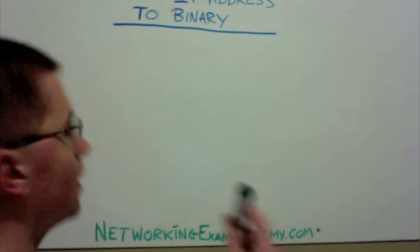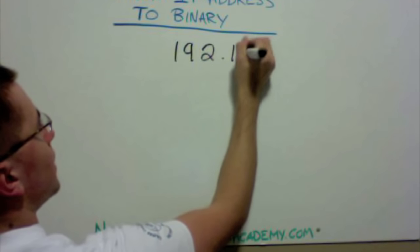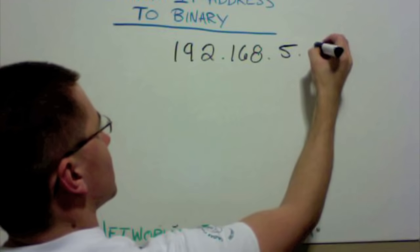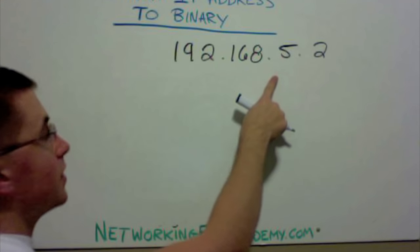First, let's start with a simple IP address, 192.168.5.2. To convert this to binary, we need to set up a table.